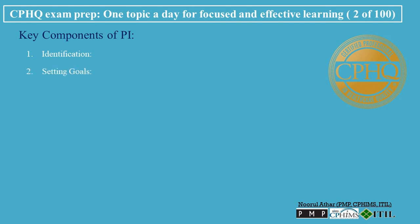Step 2 — Setting Goals: Once a challenge is identified, specific, measurable, achievable, relevant, and time-bound — SMART — goals should be set. For instance, if a hospital identifies high readmission rates for heart failure patients, a goal might be to reduce readmissions by 10% over the next six months.